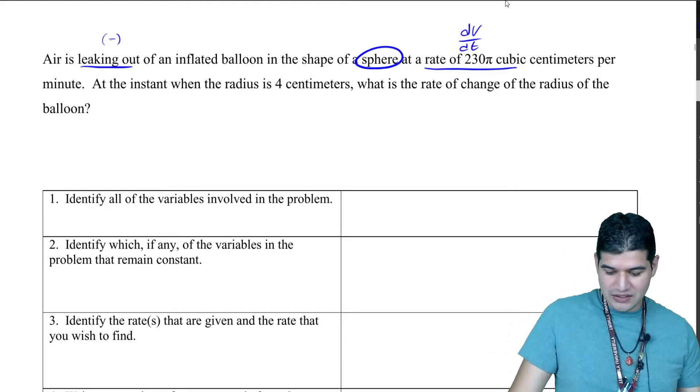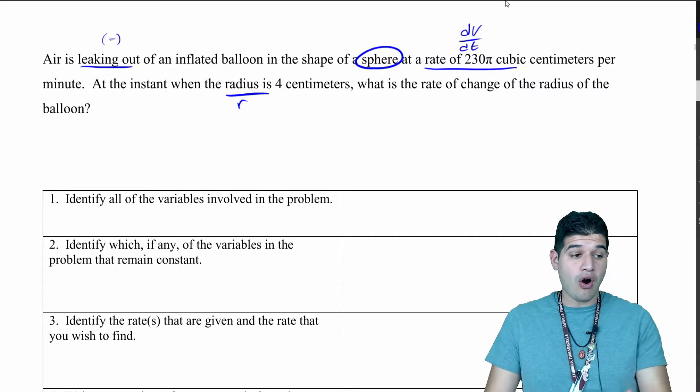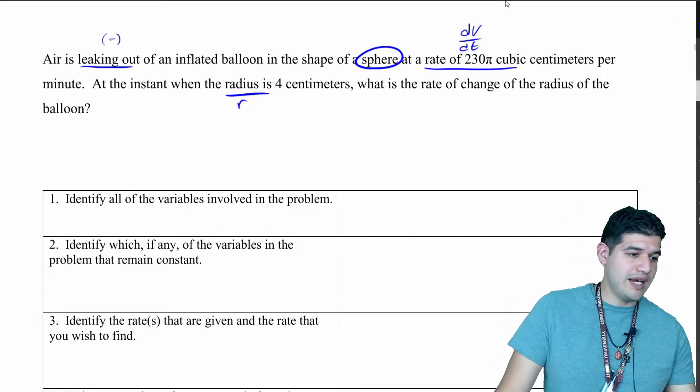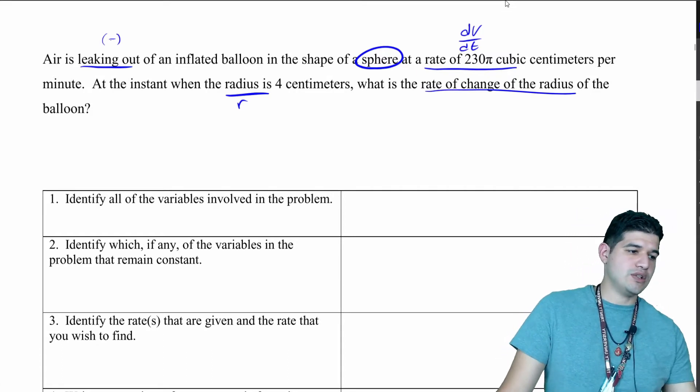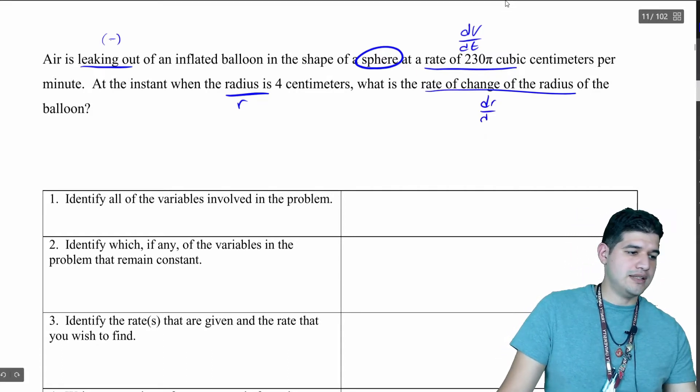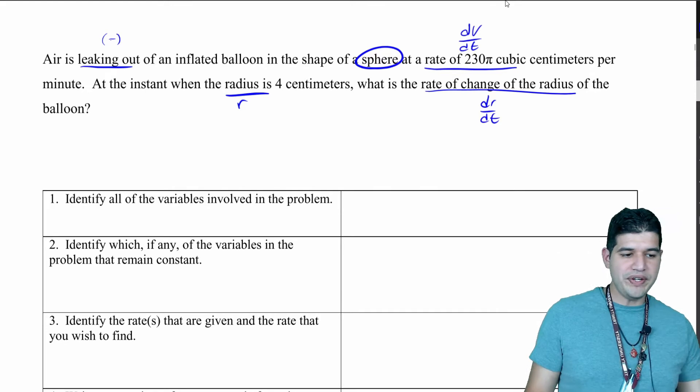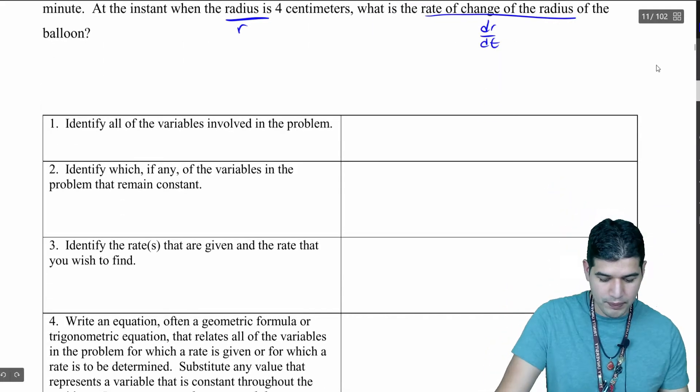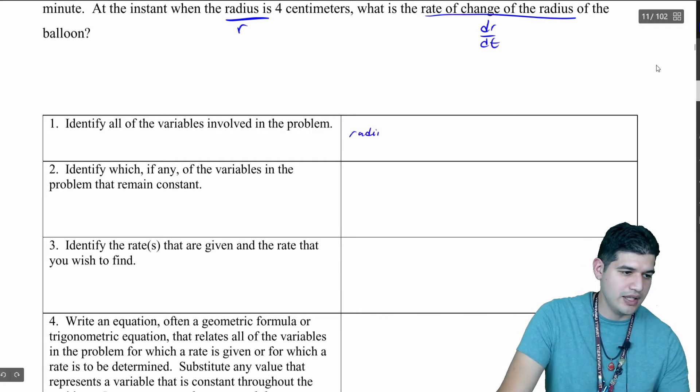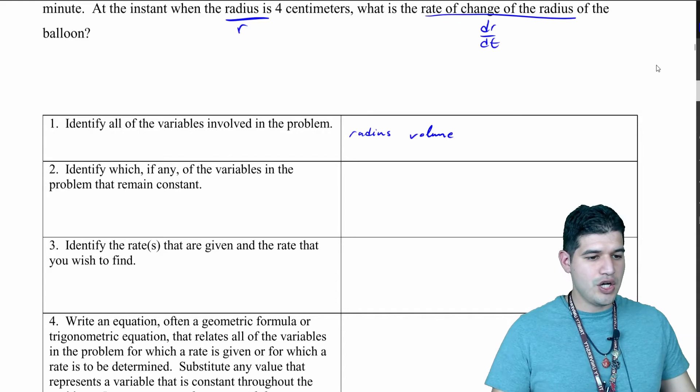At the instant when the radius is 4 centimeters, what is the rate of change of the radius? That's going to be dr/dt, the rate of change of the radius with respect to time. We've identified all of the variables involved in the problem. We are given a radius and we are given volume.